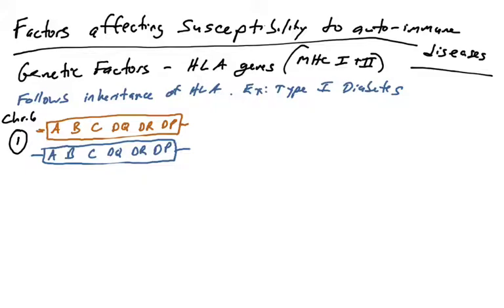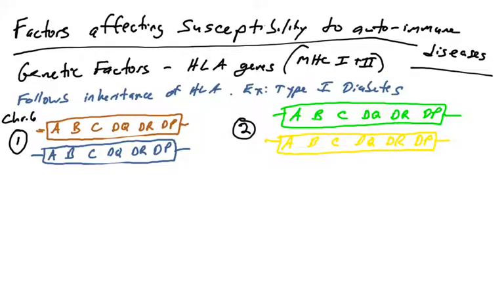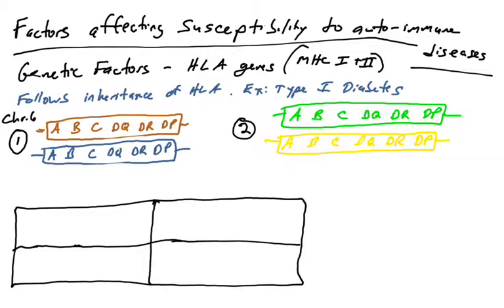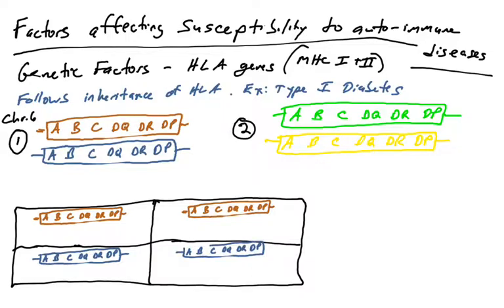We've talked about HLA haplotype. This refers to all the HLA genes that you inherit on one of your chromosome 6s. You have two chromosome 6s. Here's an individual who has two HLA haplotypes, the brown haplotype and the blue haplotype. All of those genes encode proteins that are involved in antigen presentation. Let's say there's another individual who's got this green haplotype and this yellow haplotype. If these individuals meet, now we've got to do a Punnett square.